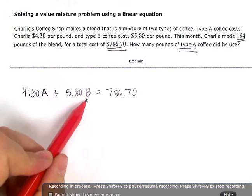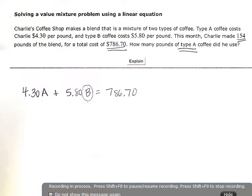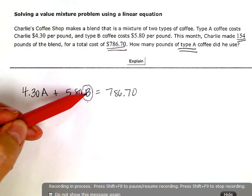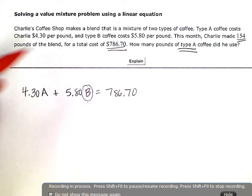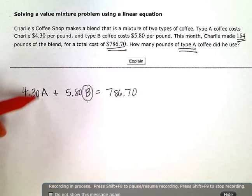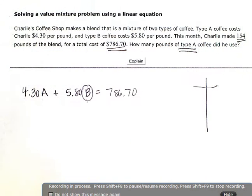So I need to replace this B and figure out how could I write or represent B, the amount of coffee B, but write it using the variable A. So if I think about it, I'm just going to use some specific examples here for a minute.